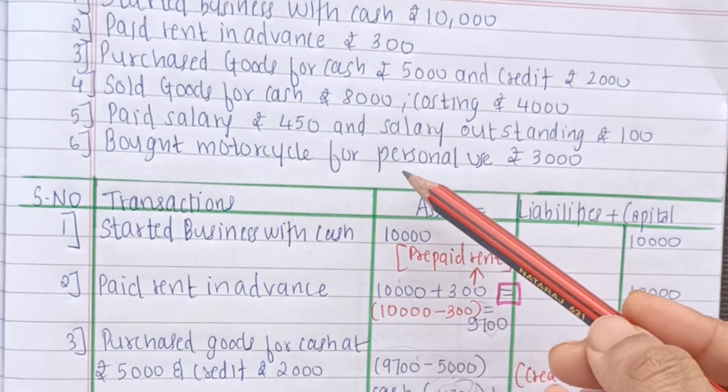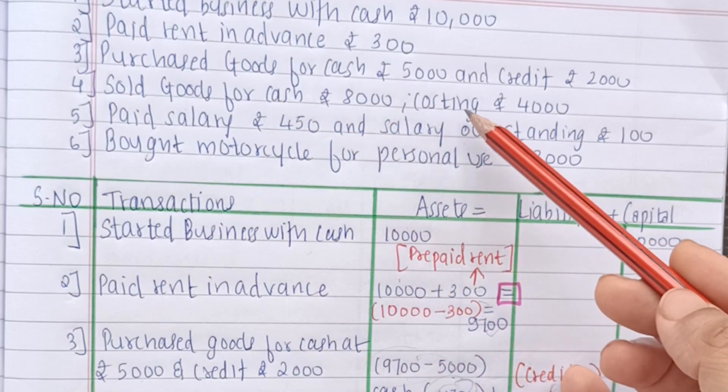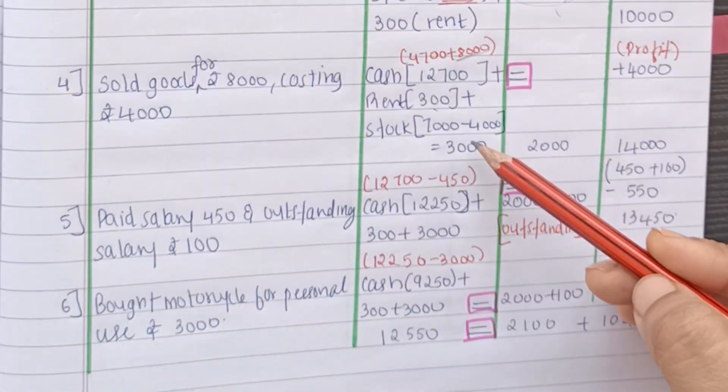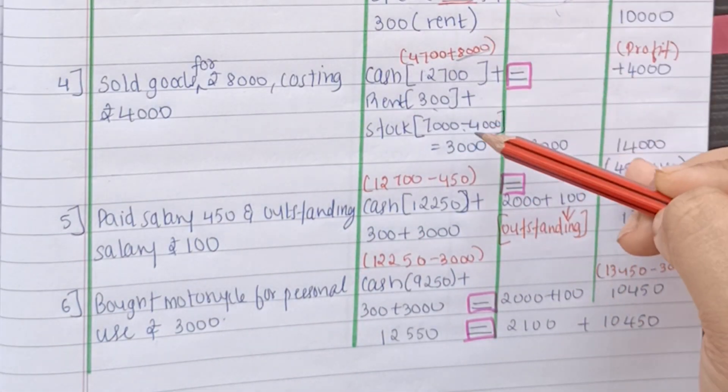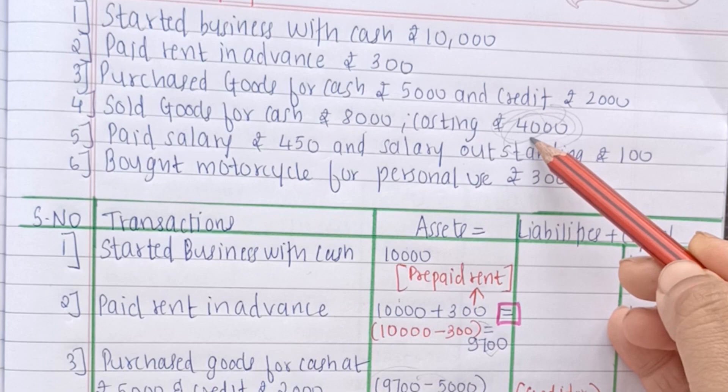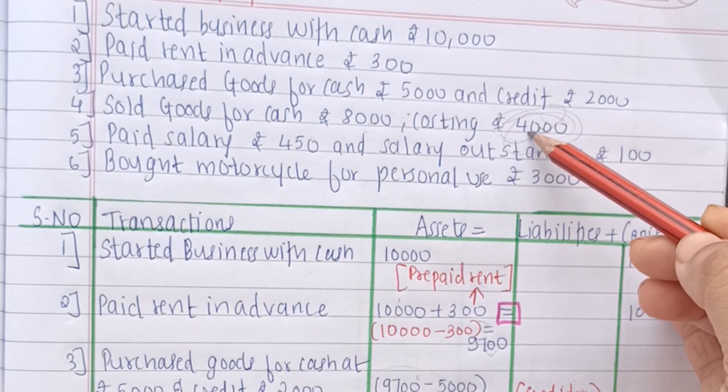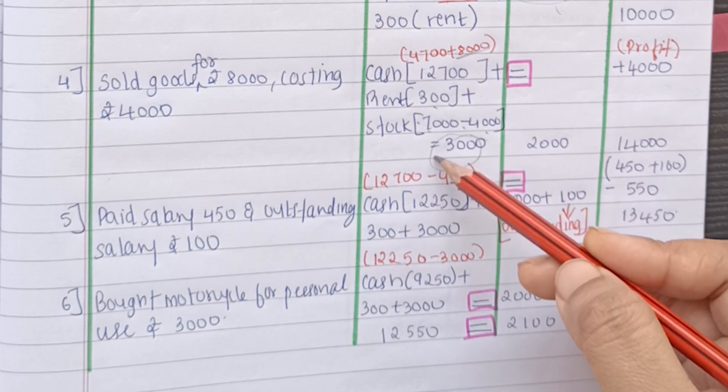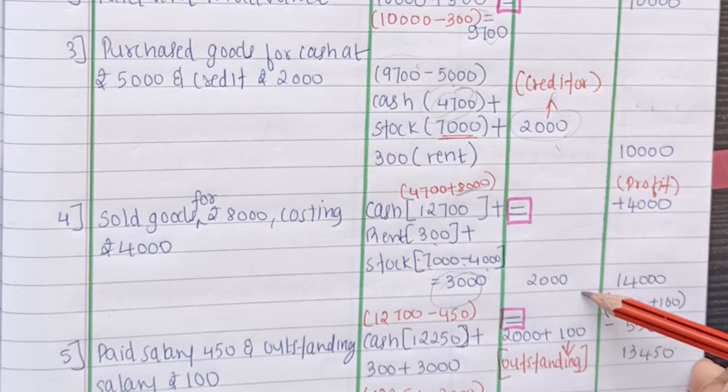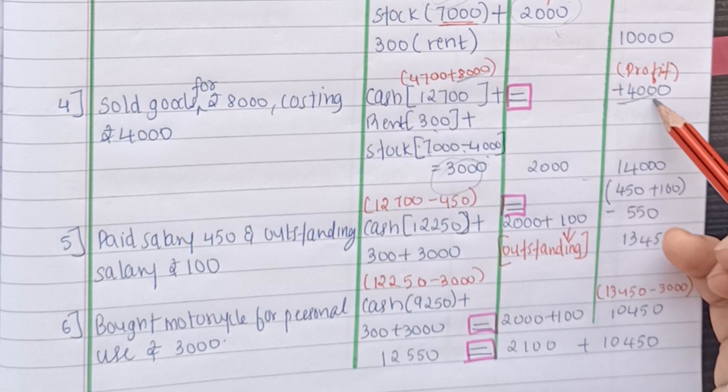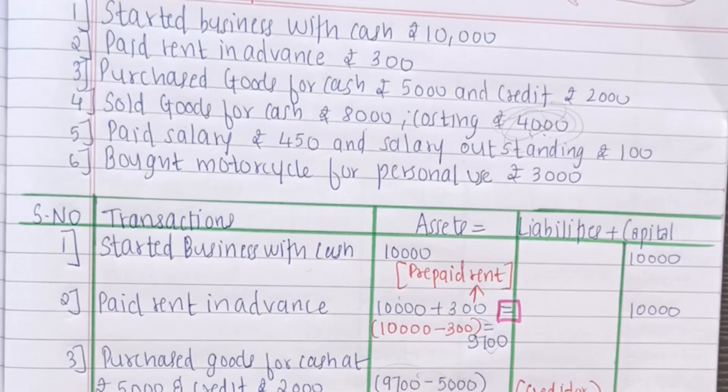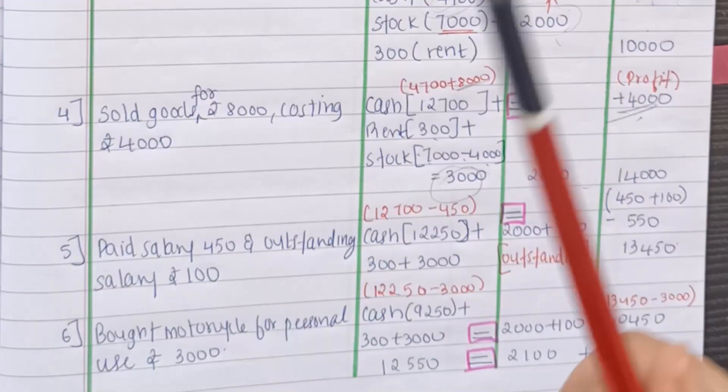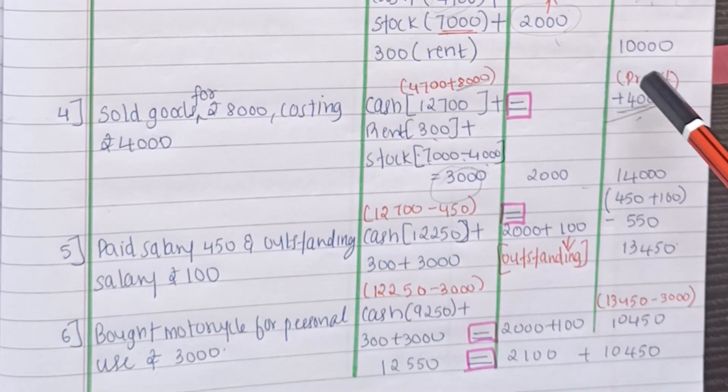So 4700 from here plus 8000 we get it as Rs.12700 plus 300. Now you see the goods. Sold goods for cash Rs.8000 costing Rs.4000. So the cost was Rs.4000. So we will deduct only Rs.4000 and not Rs.8000. This is the amount we got after selling this. So this is the amount that we are going to deduct from stock. So 7000 minus Rs.4000 will come to Rs.3000. The creditor will remain unchanged. And a profit of Rs.4000 has to be added to this. Why? Because we sold goods worth Rs.4000 at Rs.8000 and hence got a profit of Rs.4000.